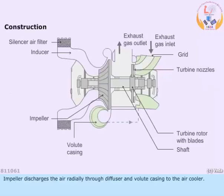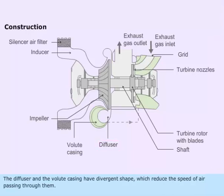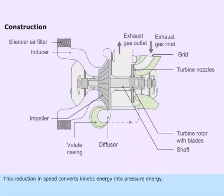The impeller discharges air radially through the diffuser and volute casing to the air cooler. The diffuser and volute casing have divergent shapes which reduce the speed of air passing through them. This reduction in speed converts kinetic energy into pressure energy.